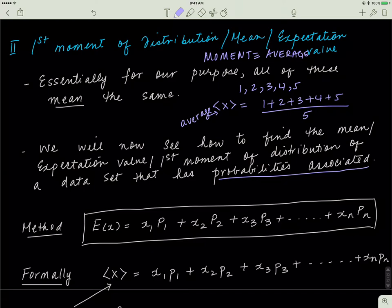In this case you have 5 total data points. The average would be — I first thought 7.5, but actually it would be 3, because 1 plus 2 plus 3 plus 4 plus 5 is 15, divided by 5 gives 3.